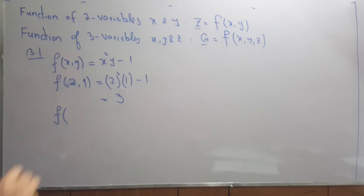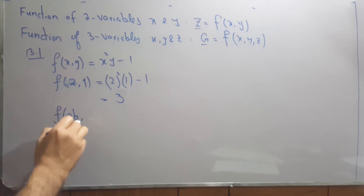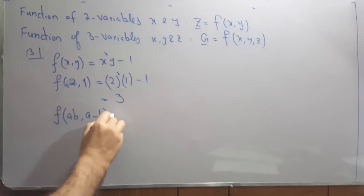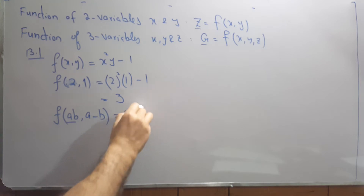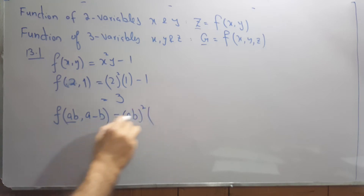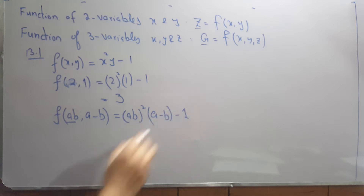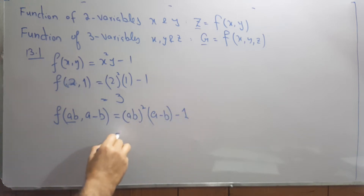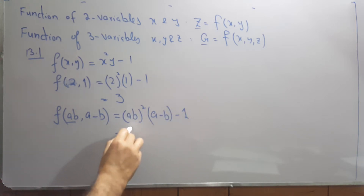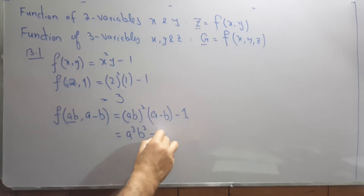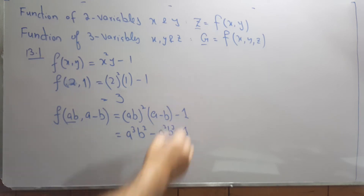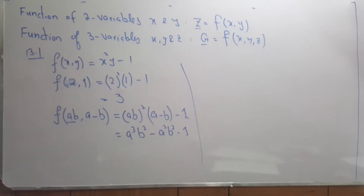Similarly, if they ask you to find the value when x is ab and y is a minus b, then simply replace x with ab and y with a minus b. You can open them up or just multiply them, so that would be a³b² times (a² b³ minus 1). They can give you any different values of x and y — you just replace those values.